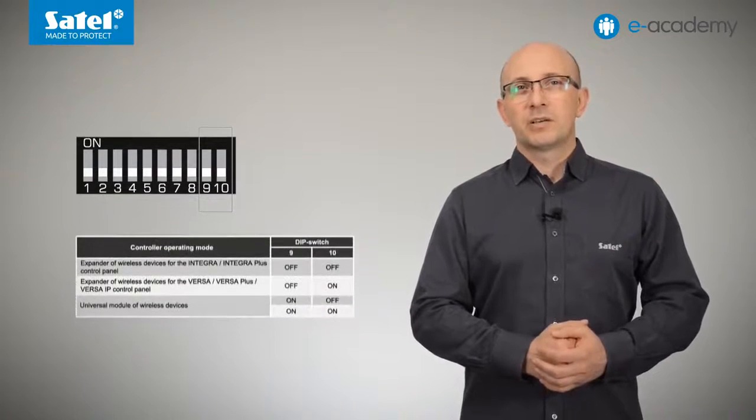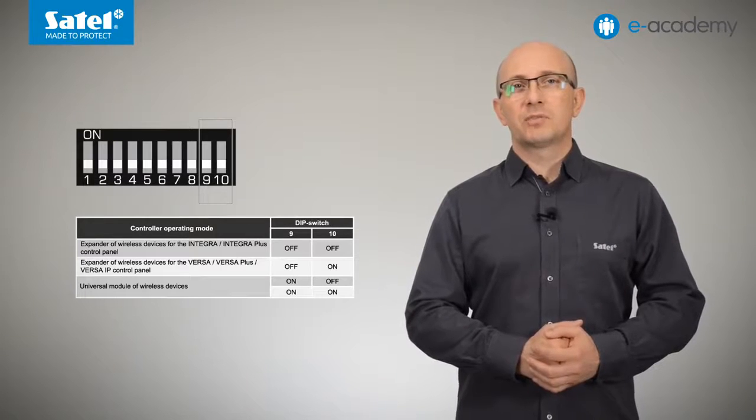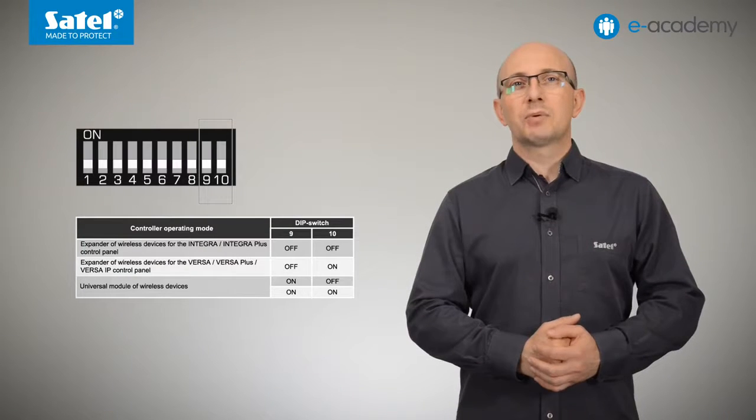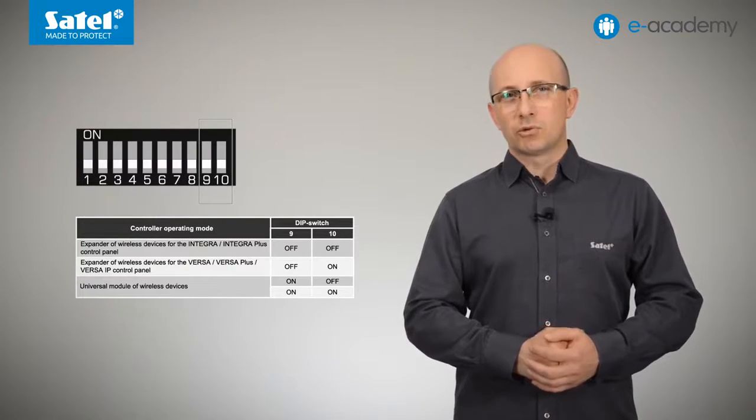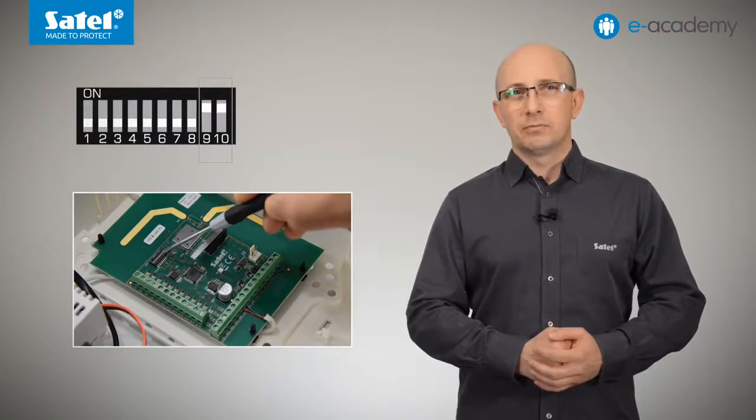First, the operating mode of the ACU220 module must be selected. For this purpose, use the DIP switches 9 and 10 located on the electronics board. By setting them in the right way, you can indicate whether ACU220 is to work as a wireless device expander for the Intriga, Intriga Plus, or Versa control panels, or whether it should work in the universal wireless module mode. For the purposes of today's episode, let's choose the last option.